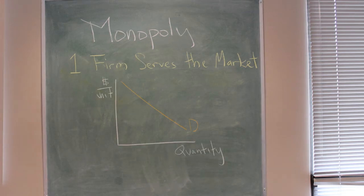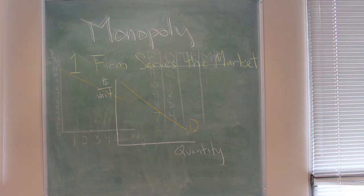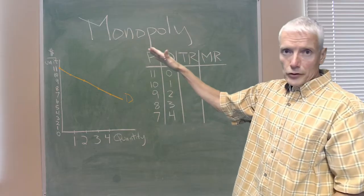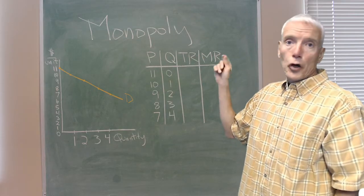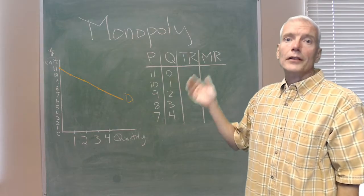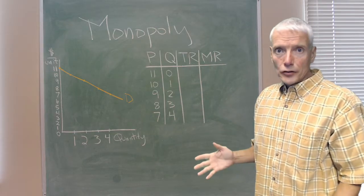So the demand curve is downward sloping. Now let's think about what marginal revenue looks like. Think about this firm that has a downward sloping demand curve and it can sell no units at $11, one unit at $10, two units at $9, three units at $8 and so forth.